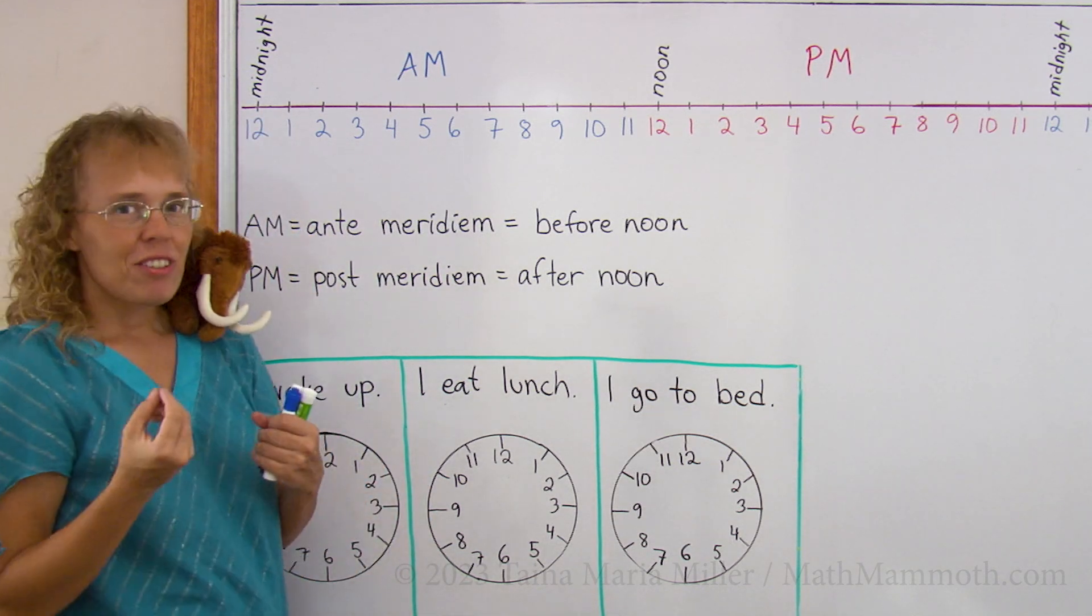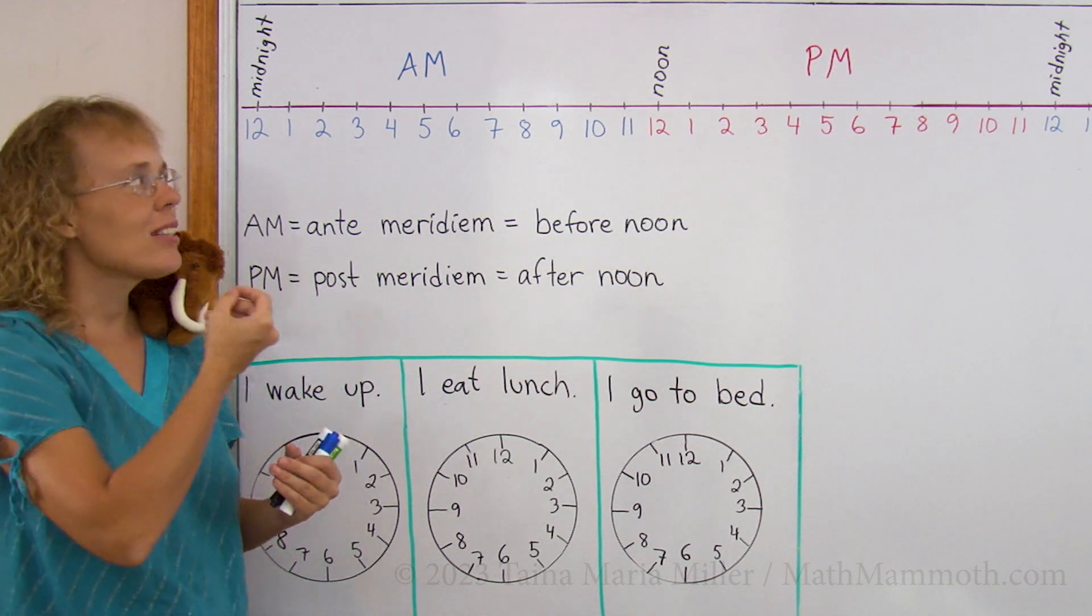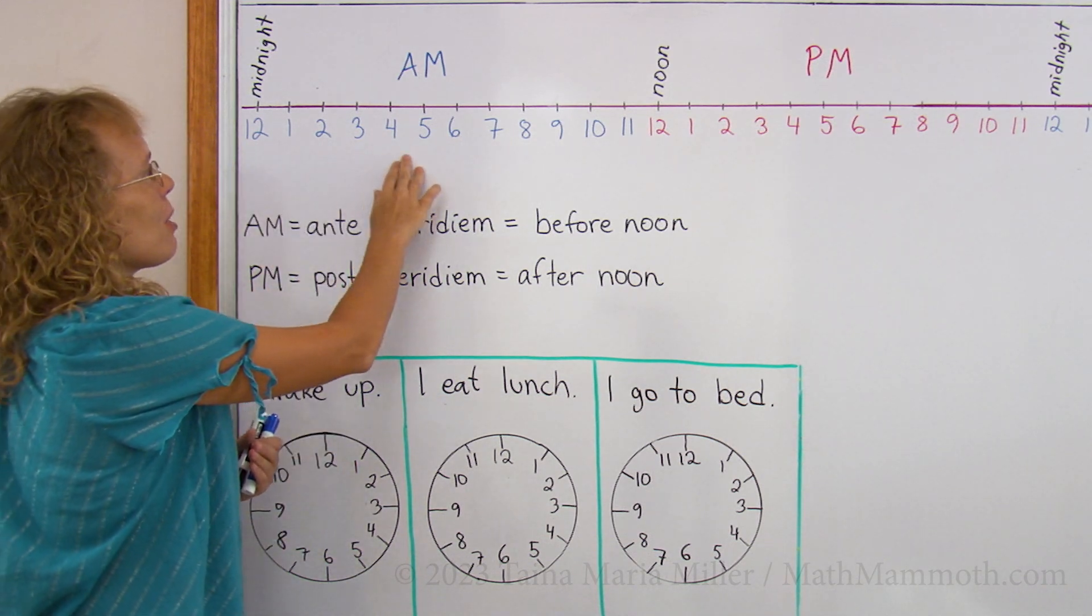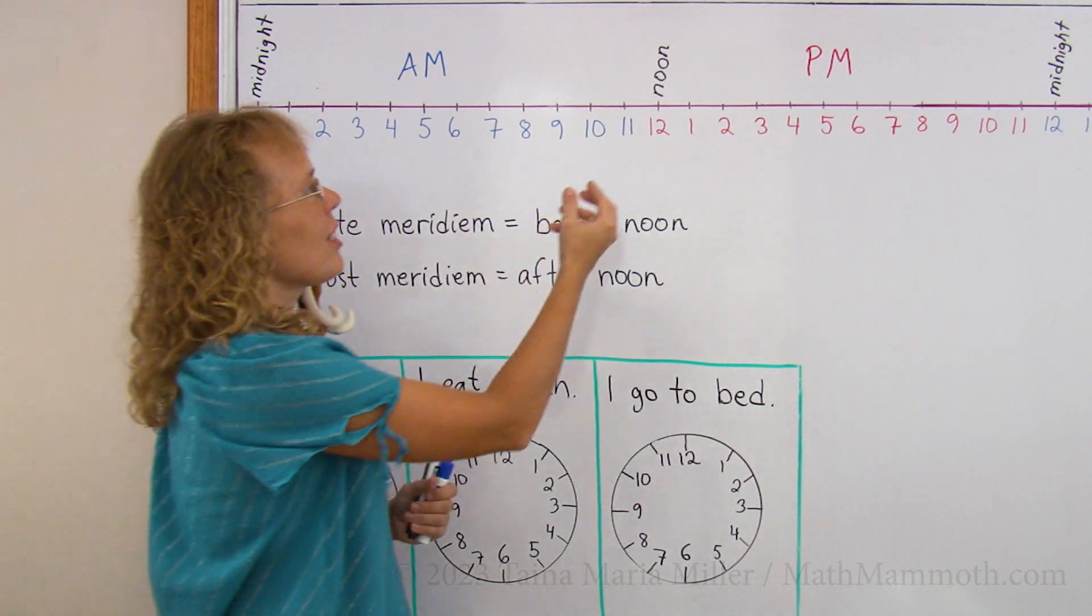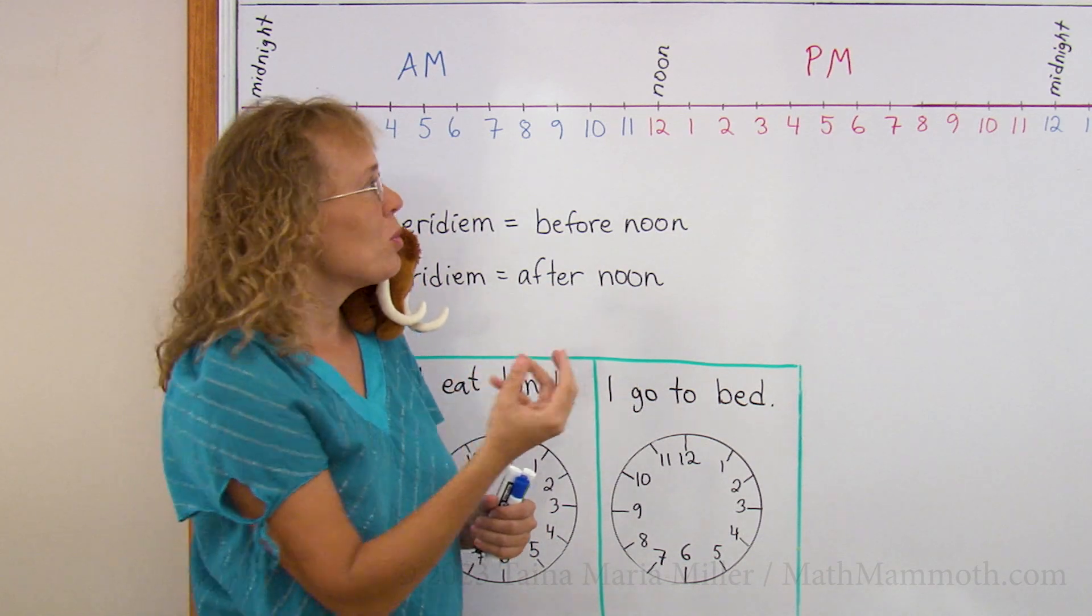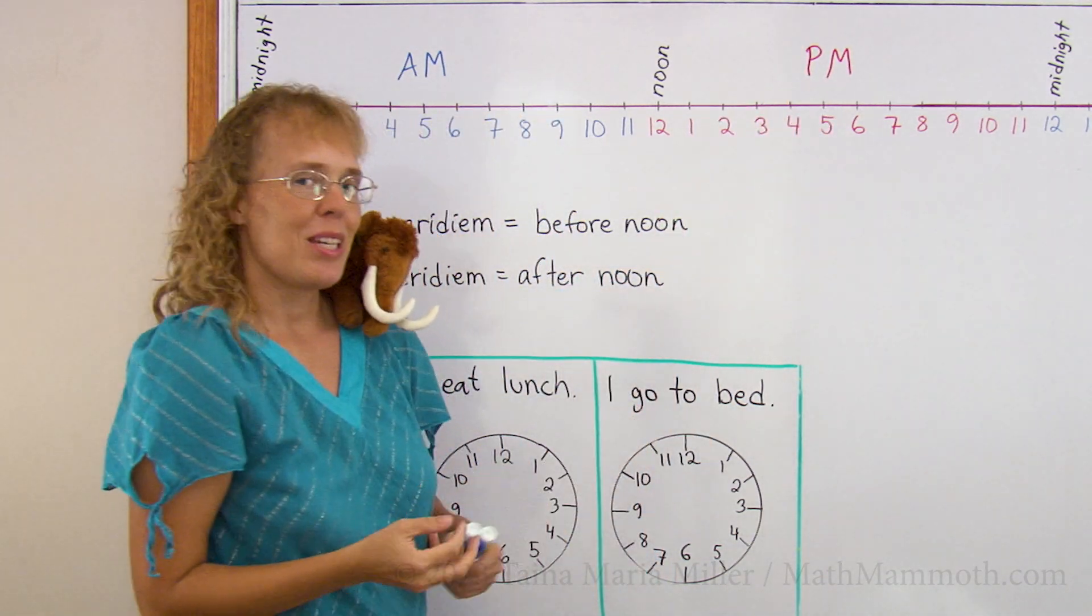And so to differentiate between these two rounds that it makes, the first time the hours are marked with AM: 7 AM, 3 AM, 1 AM, and so on. And the second time around after noon, we mark them with PM: 3 PM, 7 PM, 9 PM, and so on.